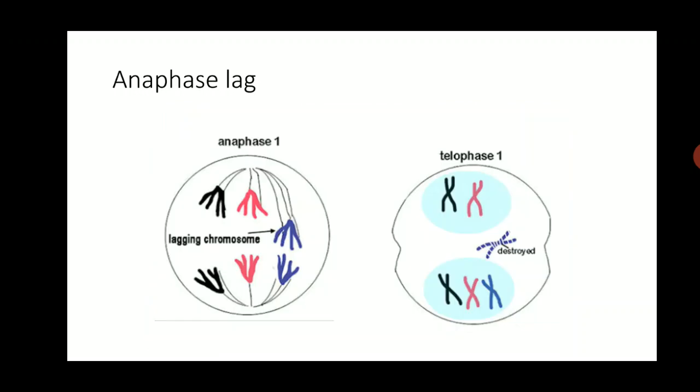Another cause for aneuploidy is anaphase lag. During anaphase, one of the chromosomes lags behind the rest. When the nucleus separates into two, this lagging chromosome does not go into either nucleus — it remains in the cytoplasm and is lost from the cell. The final result is two daughter nuclei: one with a normal set of chromosomes and the other with one fewer chromosome. This condition usually gives rise to monosomies.